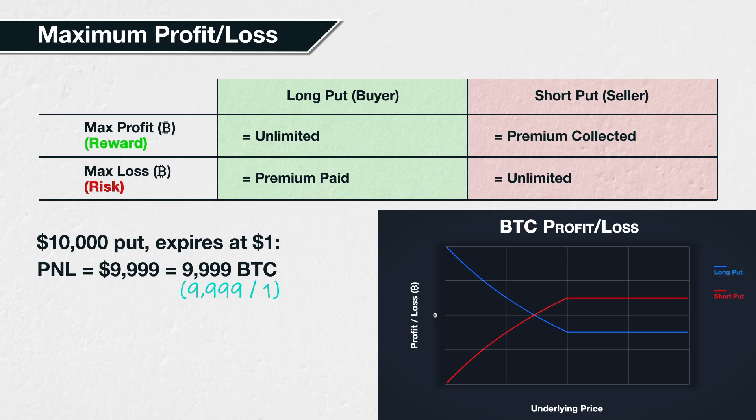This last extreme example is of course extremely unlikely, however it's vitally important to be aware of this relationship between the dollar and the Bitcoin profit when your collateral is stored in Bitcoin instead. This is never more relevant than when a trader is naked short cryptocurrency put options. For some traders making the switch over to crypto options from traditional options, this is a point that can easily be overlooked, because they are used to the selling of put options having a cap on losses.